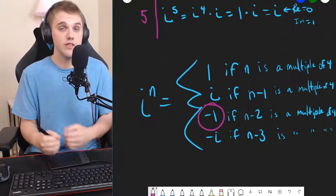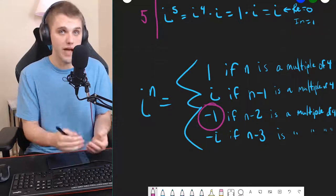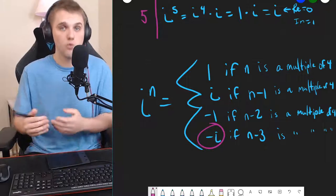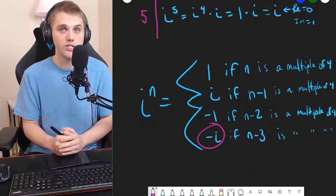If i to the n is negative 1, then the real part is negative 1, and the imaginary part is 0. And if i to the n is negative i, then the real part is 0, and the imaginary part is negative 1.